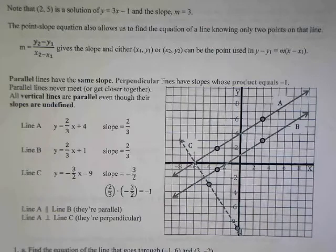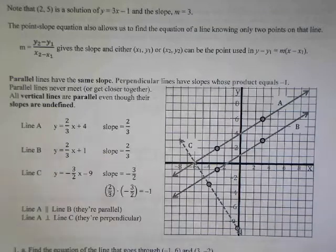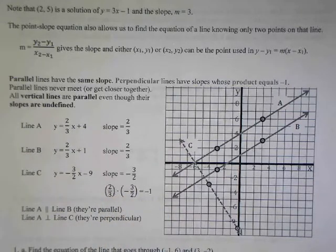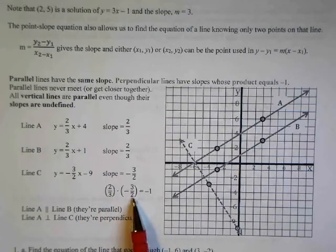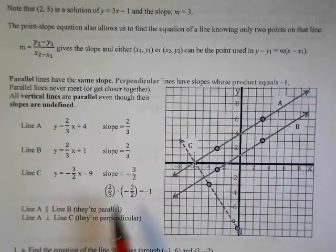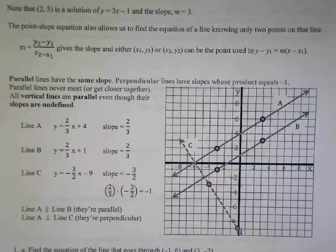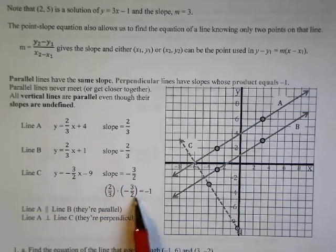Line C is perpendicular to the other two lines. Lines are perpendicular when you multiply their two slopes and get negative one. Another way of putting it: one slope is positive, the other is negative, and the fractions are reciprocals of each other. Notice two over three for the first one and three over two for the second one — one positive, one negative, and reciprocals of each other.